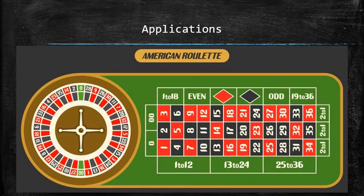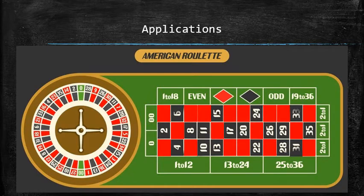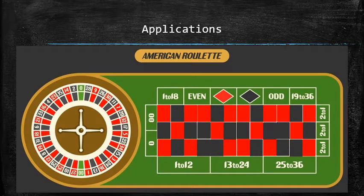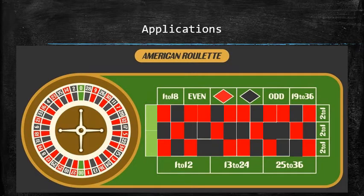Let's play American roulette. In American roulette, there are 18 red slots, 18 black slots, and 2 green slots. So the probability of the ball landing on red is 18 out of 38, and the probability of the ball landing on green or black is 20 out of 38.